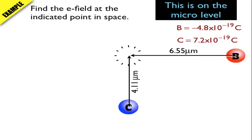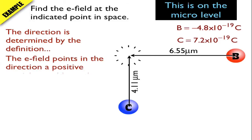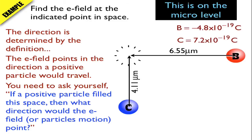So I'm going to find the direction. To find the direction, I'm going to look at the E fields and see what the E fields are doing. Remember, the E field is defined as a path a positive particle would take. So I need to ask myself, if I put a positive particle in this space, what would each charged particle do?